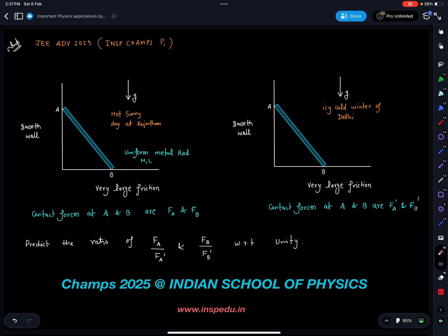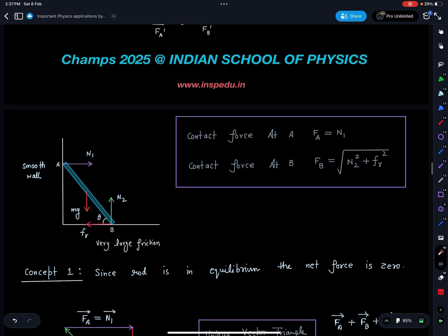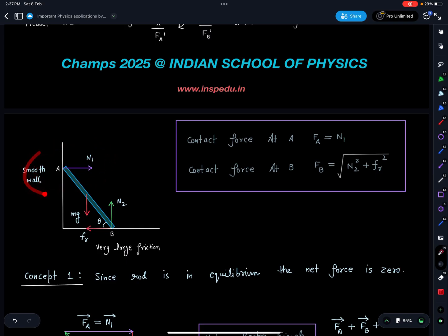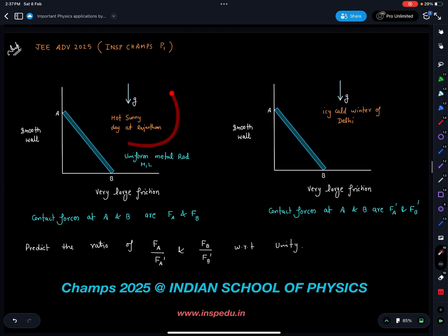Normally in books you will not find this, so let's start. We have to comment on this contact force at A, basically it is N1. Because here temperature is more and here temperature is less and it's a metal rod, at high temperature length of this rod will be more. Friction is very large, so we'll say that this point is at rest. In icy cold winter, length is going to be lesser, so point B remains fixed, this point will come down here and this point will go up here.